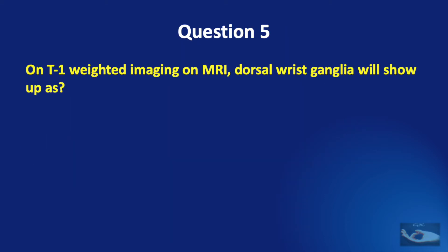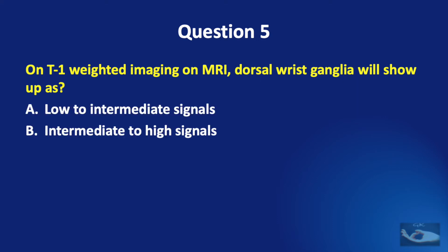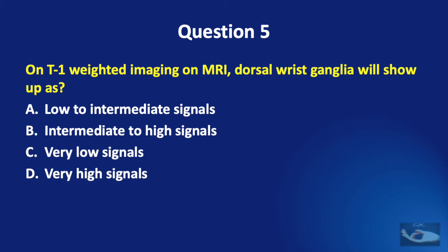Question number five. On T1 weighted imaging on MRI, dorsal wrist ganglia will show up as: low to intermediate signals, intermediate to high signals, very low signals, or very high signals?